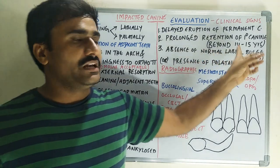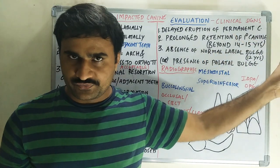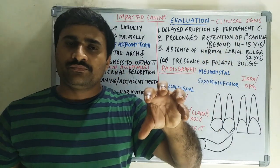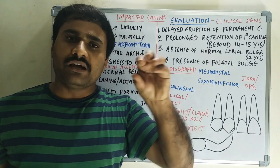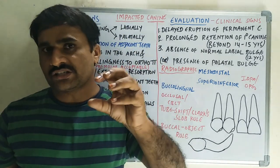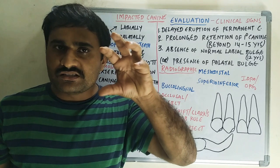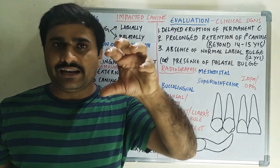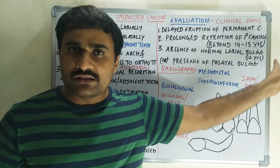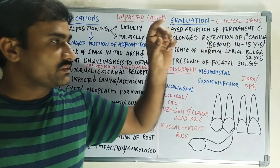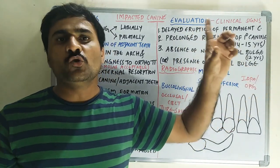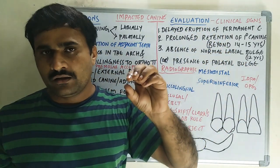Another sign is absence of the normal labial bulge. In a normal individual, the labial bulge of the canine is visible by 12 years. If there is absence of this labial bulge, or if the bulge is present on the palatal side instead, then you may suspect impaction.